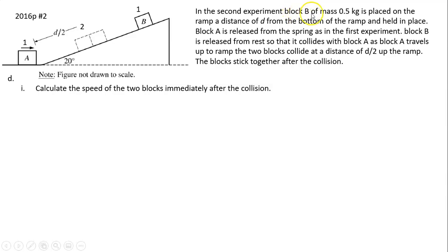Now in the second experiment, block B of mass 0.5 kg is placed on the ramp at distance d from the bottom of the ramp and held in place. Block A is released from the spring as in the first experiment. Block B is released from rest so that it collides with block A as block A travels up the ramp. The two blocks collide at distance d/2 up the ramp. The blocks stick together after the collision.